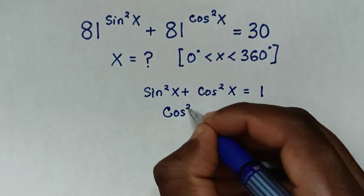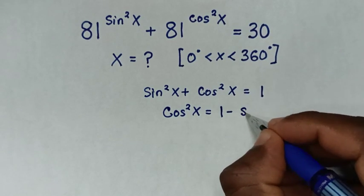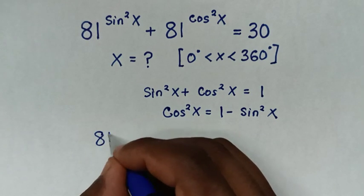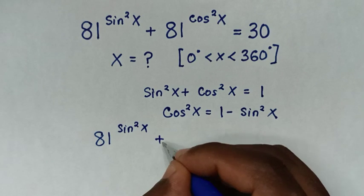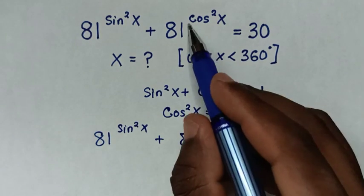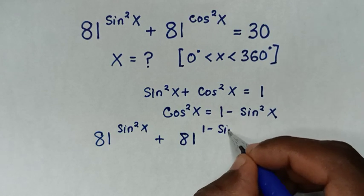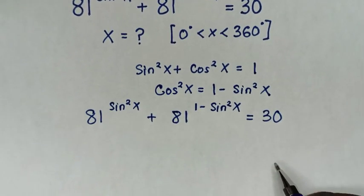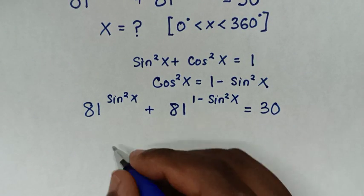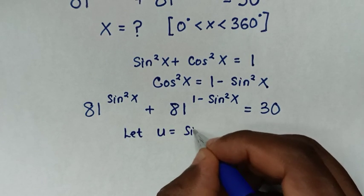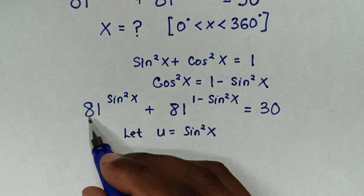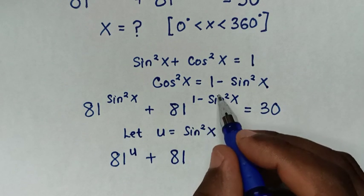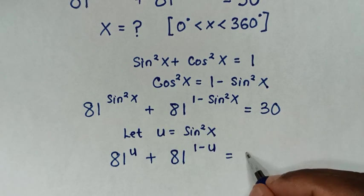So cos²x is equal to 1 minus sin²x. We substitute this into the equation: 81^(sin²x) + 81^(1 − sin²x) = 30. Then, since sin²x is common, we let u = sin²x.